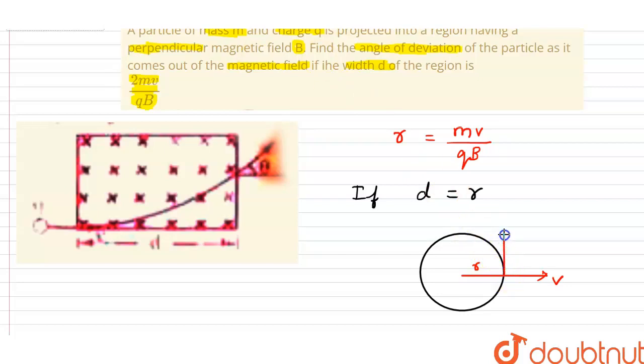This is the tangent. The tangent and the radius are 90 degrees, pi by 2. If D and R are equal, that means theta will be 90 degrees, that is pi by 2.